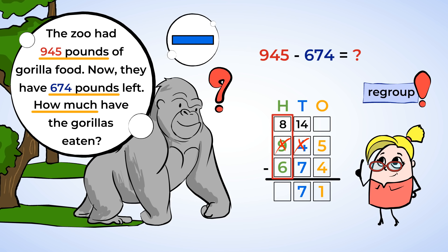Lastly, subtract the hundreds. Remember, we have just 8 hundreds now. 8 minus 6 is 2. So write a 2 in the hundreds place. So, the gorillas ate 271 pounds of food this week. Wow! They must have been really hungry.